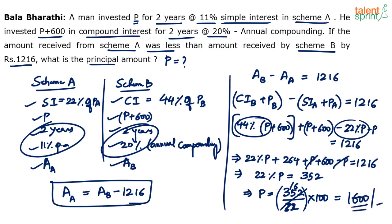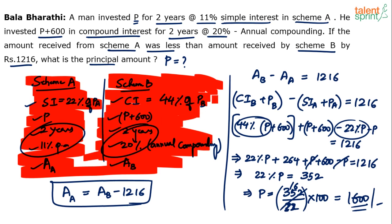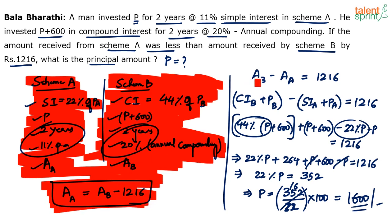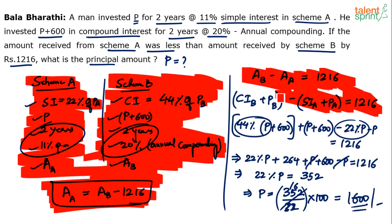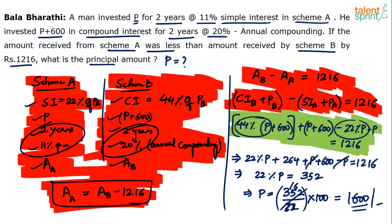The final answer is 1600. Now, before jumping to the next question, I'd like to highlight what is not required. All the initial setup written on the left is just restating the question — not needed. A smart person starts calculation only from the substitution step. Only two steps are really needed if you can do mental calculation.